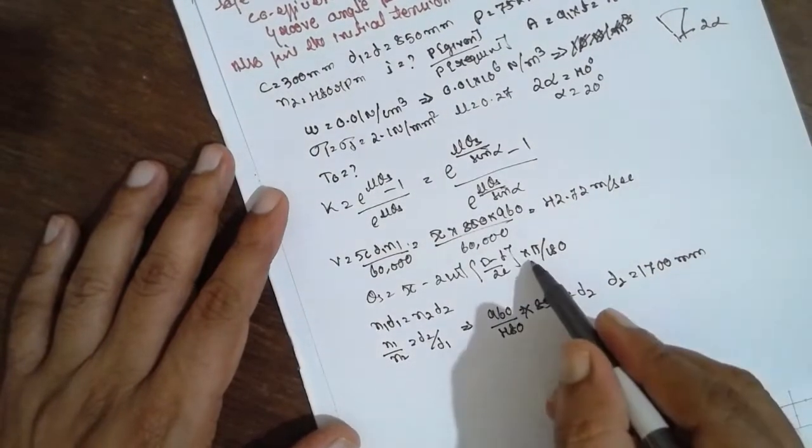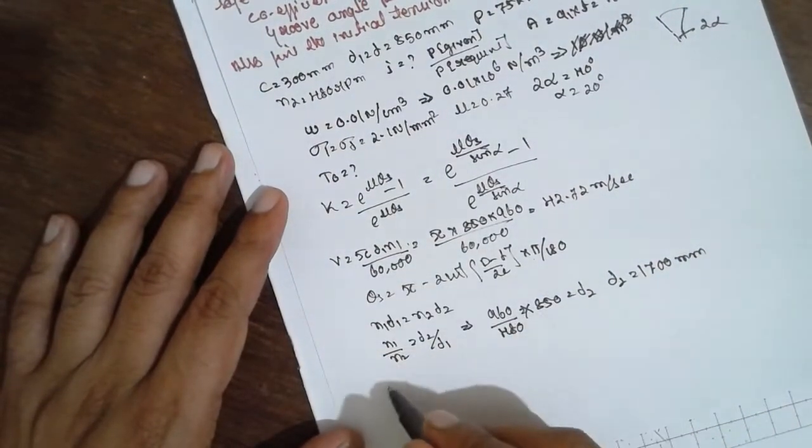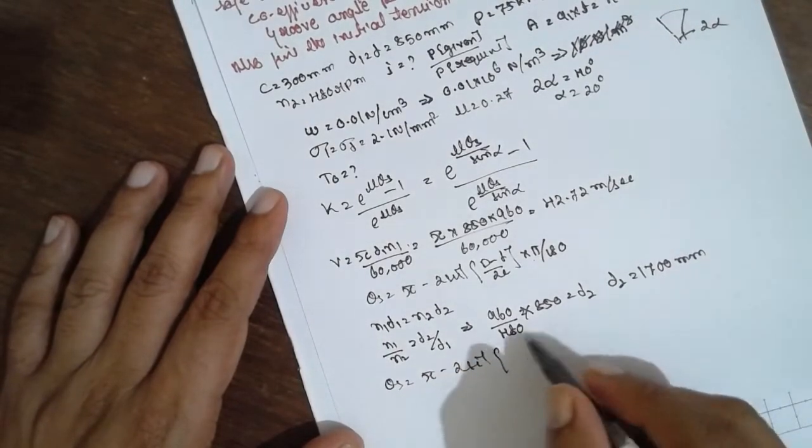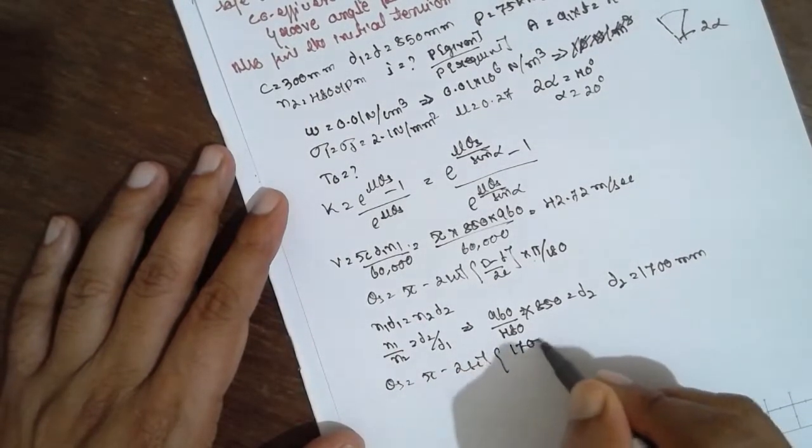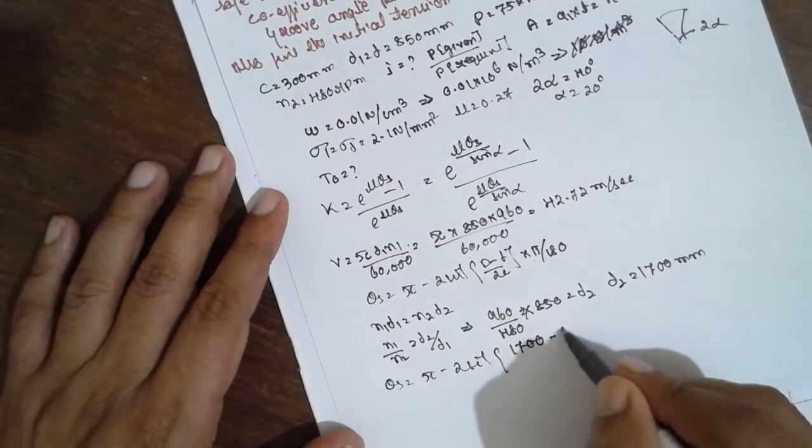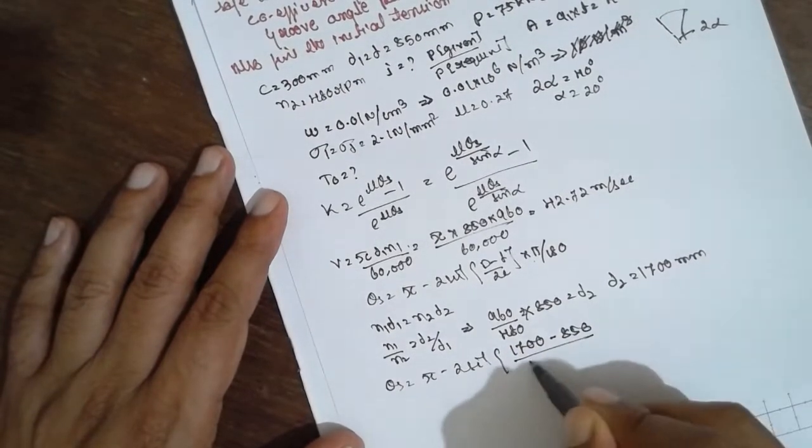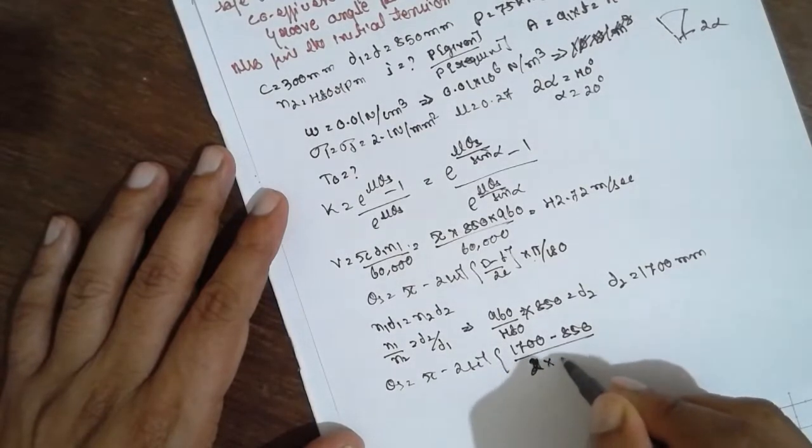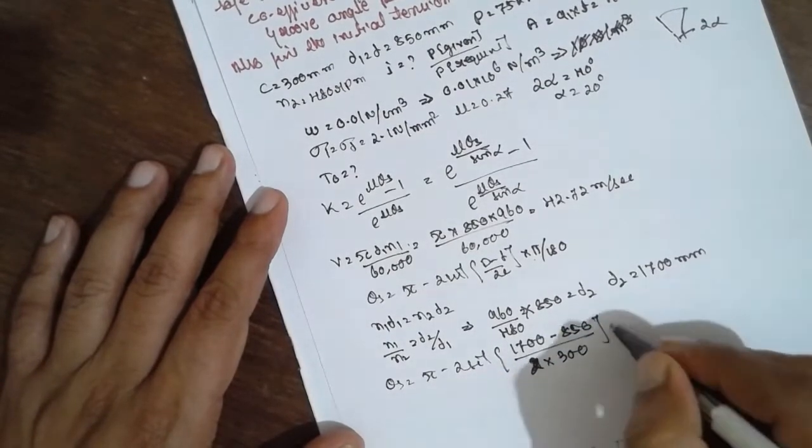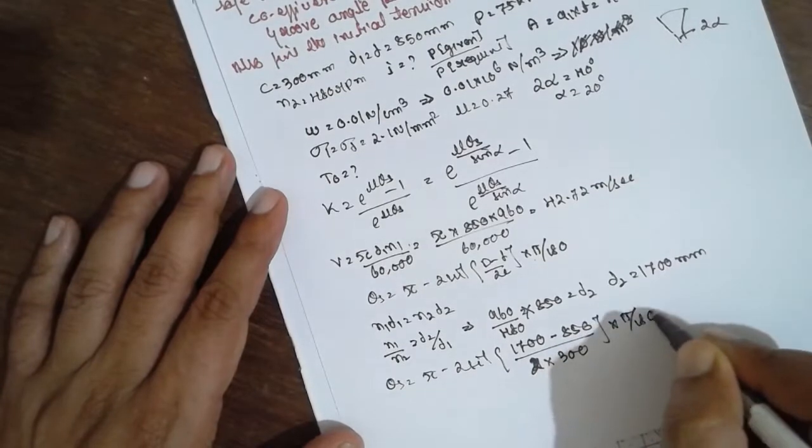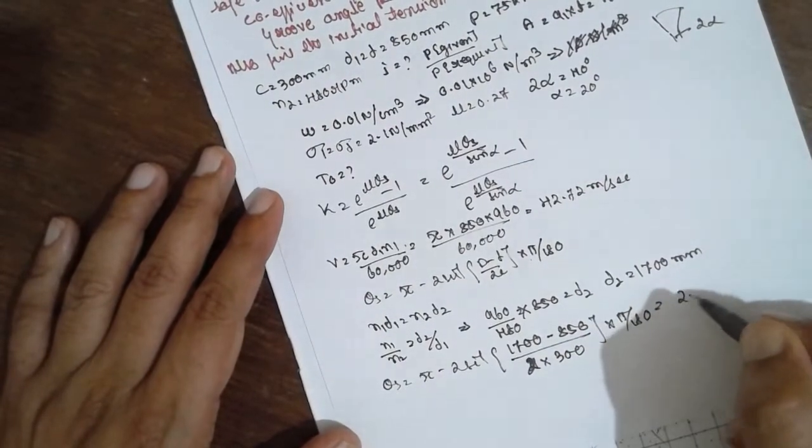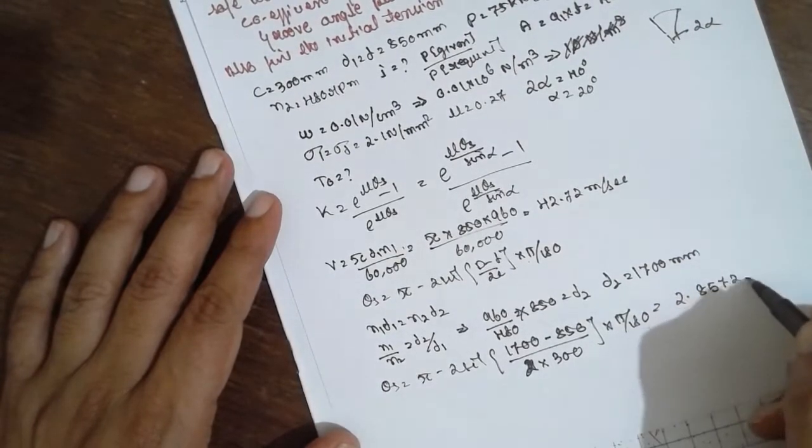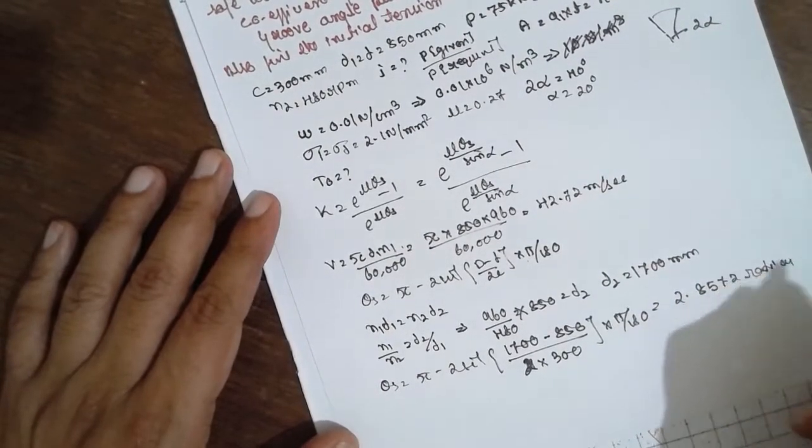Once you know this value, substitute here. Already c is known. Theta_s is equal to pi minus 2*sin^(-1)[(1700-850)/(2*3000)] times pi/180. The answer will be 2.8572 radians.